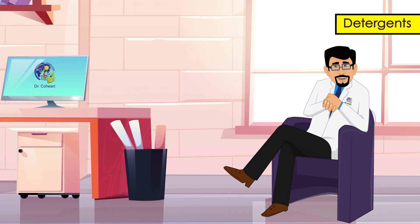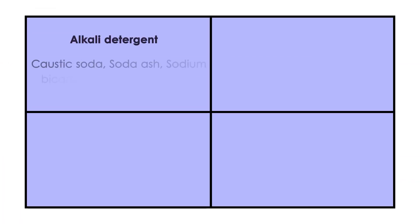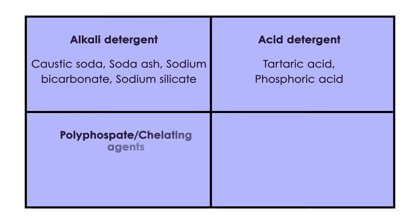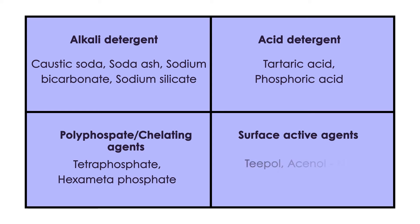The detergents may be of different types: the alkali detergents such as caustic soda, soda ash, and sodium silicate; the acid detergents such as tartaric acid and phosphoric acid; the polyphosphate or chelating agents such as tetraphosphates; and the surface active agents such as T-pol and common soap.